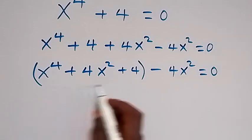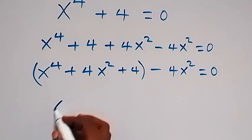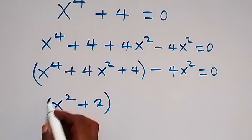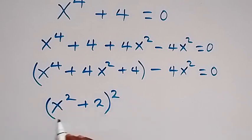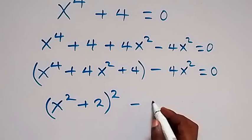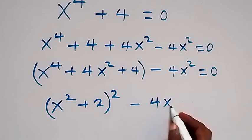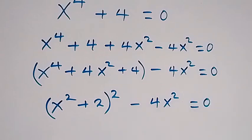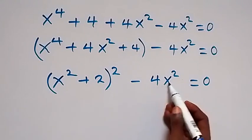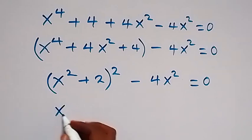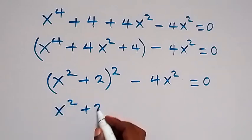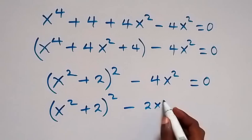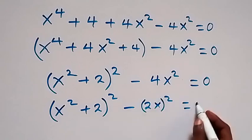In the next step, we can group this as x raised to the power 4 plus 4x squared plus 4, then we group this together. Then we have minus 4x squared, which equals 0. What we have inside this bracket, we can write it as x squared plus 2, all squared. The expansion here will give us this. Then we have minus 4x squared equals 0. We can equally write this as x squared plus 2, all squared, minus 2x, all squared, equals 0.